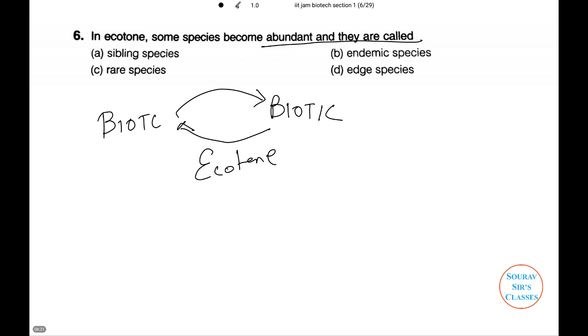It is characterized by the presence of both communities. Let us mark it as one and two. Therefore, the total number of species in this ecotone than in the adjoining communities are much more and this phenomenon is known as the edge effect. Thus, those species which live abundantly in this ecotone are called edge species. Thus, number four is our option.